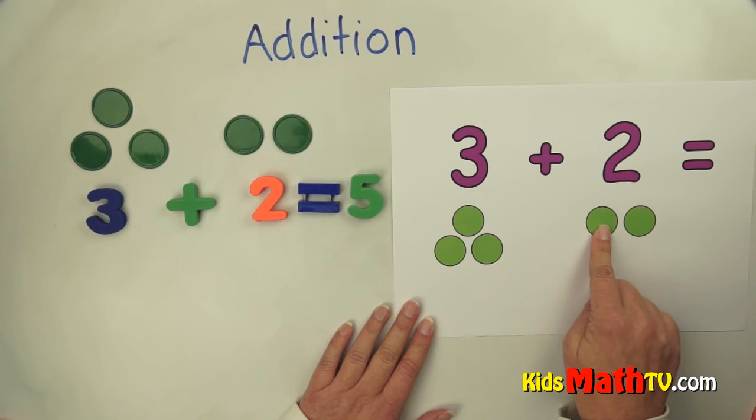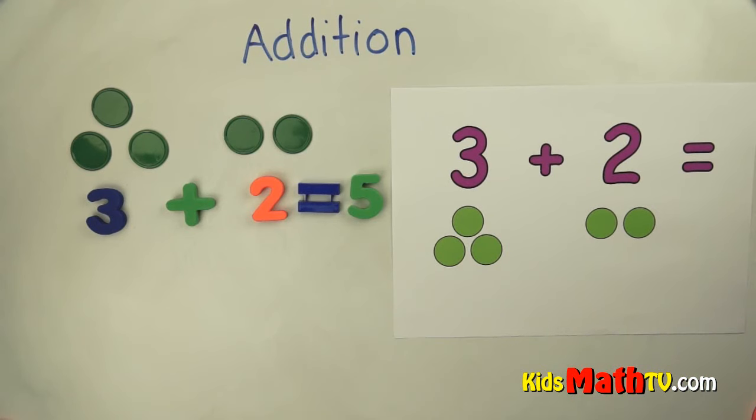And add that to two. One, two. All together, how many circles are there? One, two, three, four, five. There are five circles.